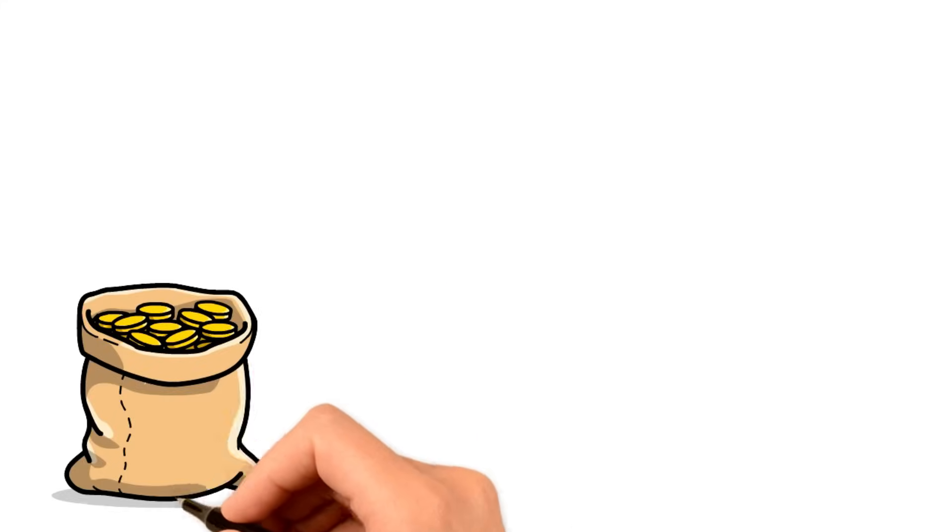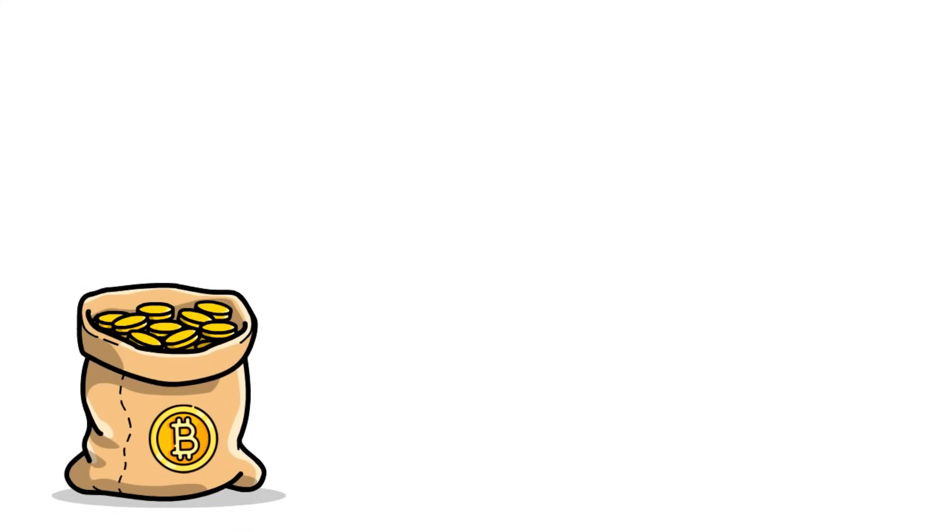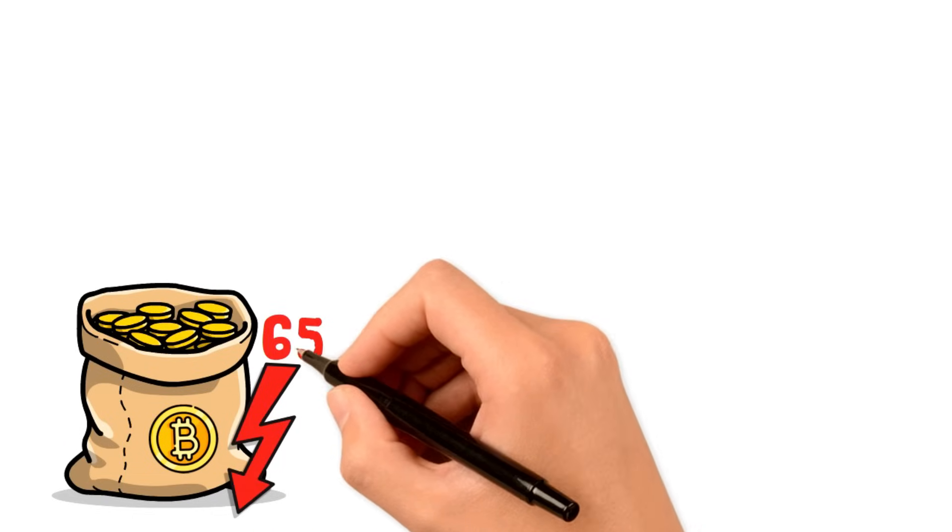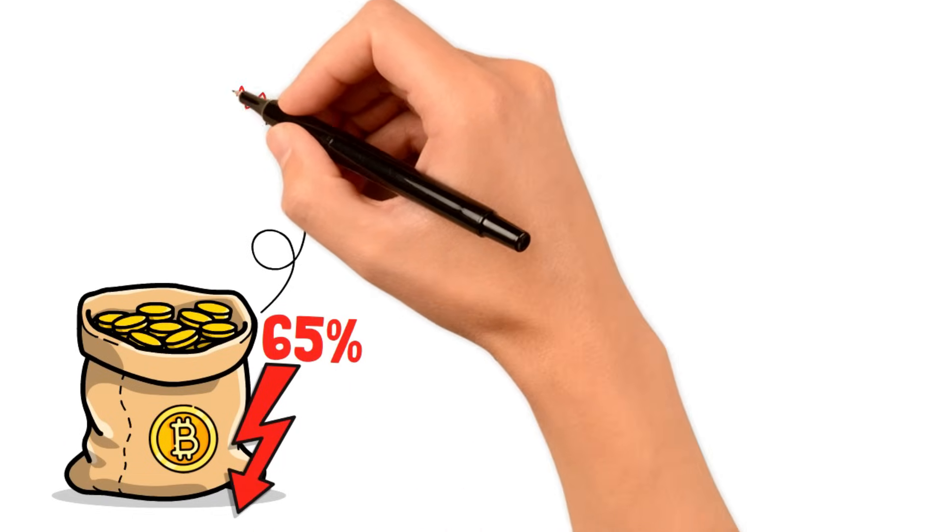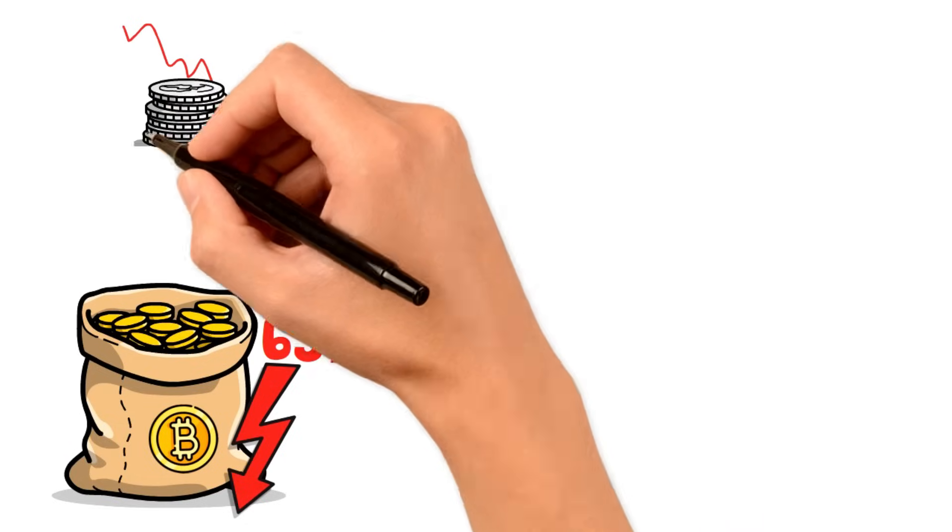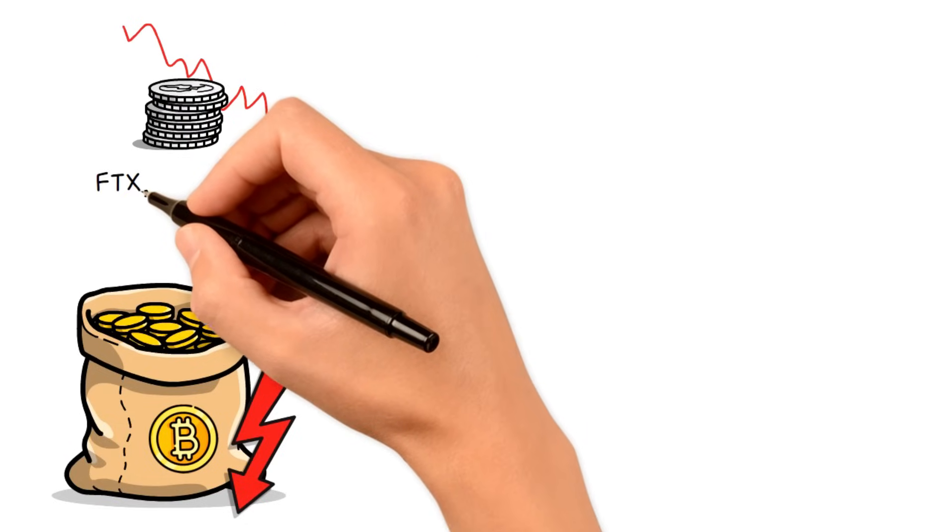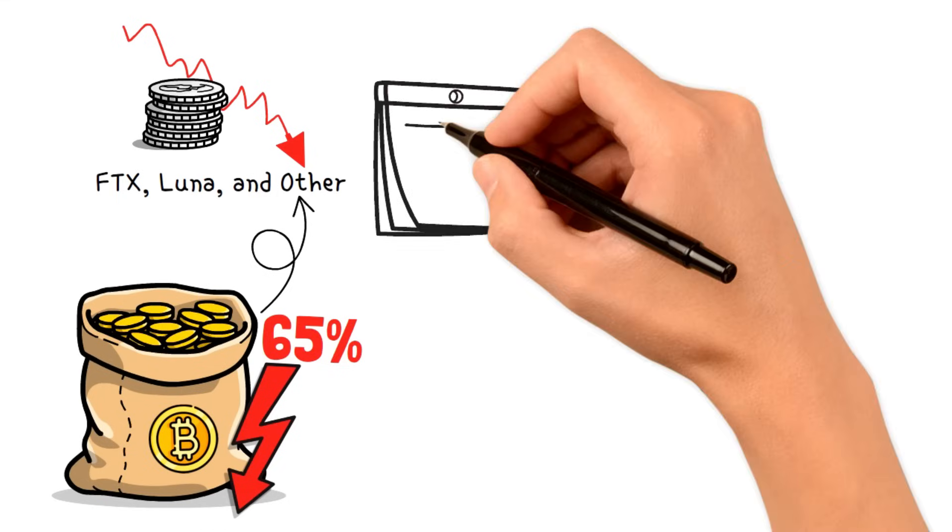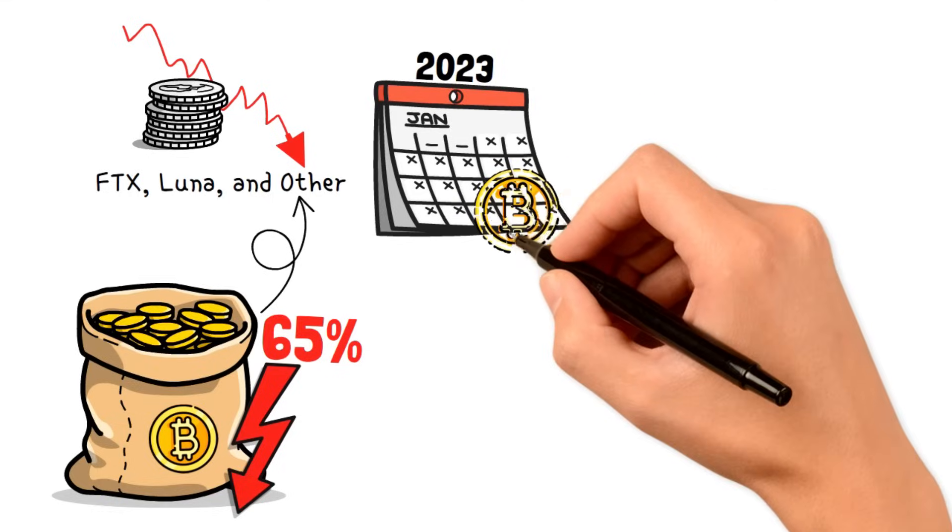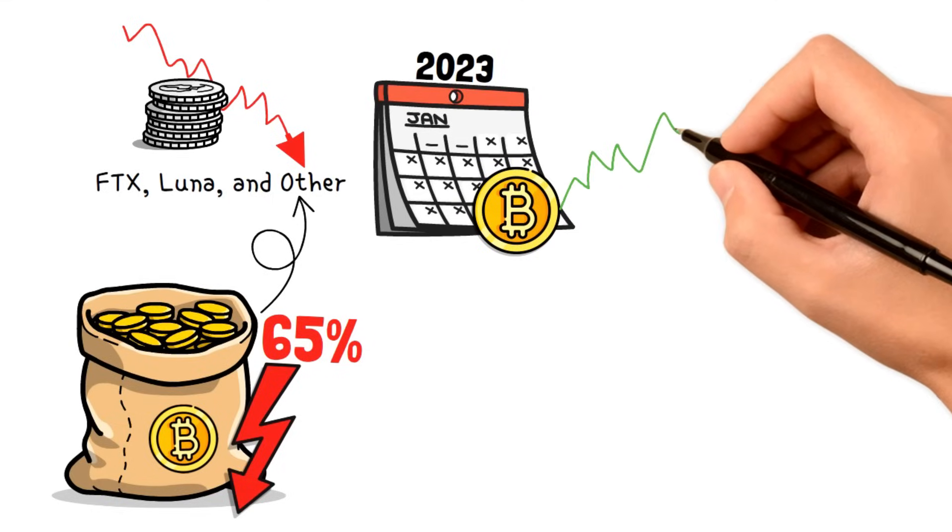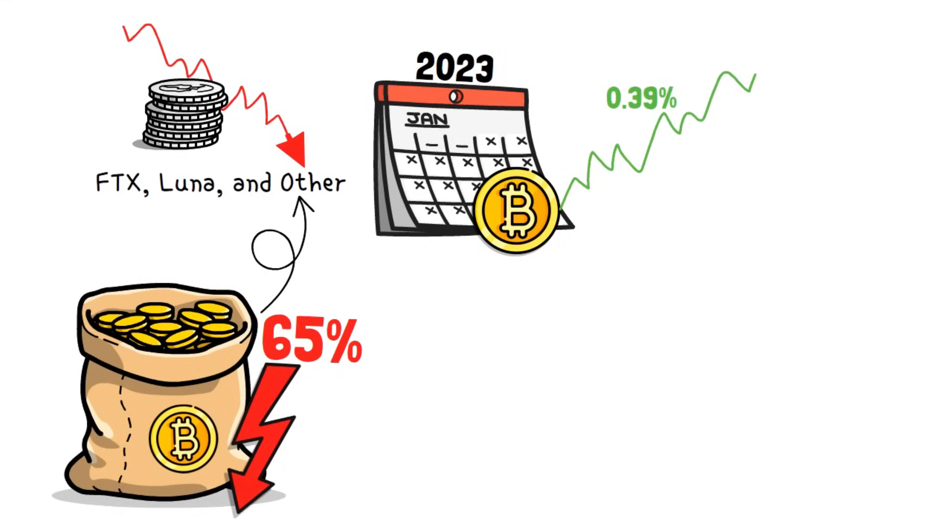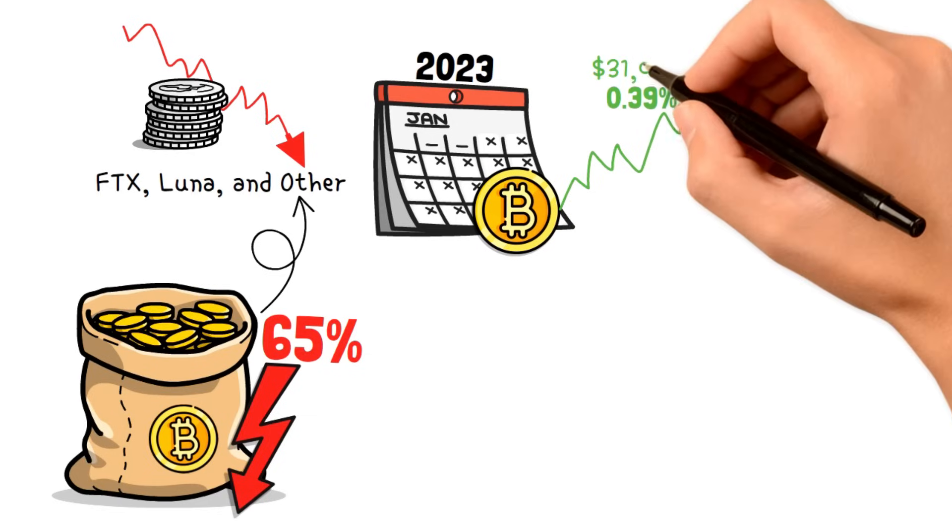And how about cryptocurrencies? 2022 was a particularly challenging period for Bitcoin, which plummeted up to 65% of its value. While it was unexpected, it had a catastrophic domino effect on FTX, Luna, and other macroeconomic conditions. However, the start of 2023 brought some hope for the crypto market as signs of recovery began to appear. In July, Bitcoin recorded a modest uptick of 0.39%, reaching a value of approximately $31,000.